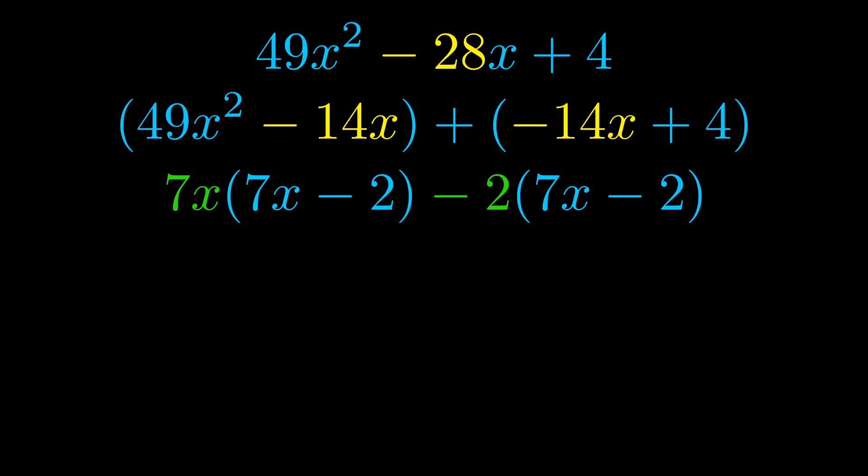Notice also how what remains inside of the parentheses is the same in both cases. The blue values are the same. Those blue values will become one of our factors, and we will combine the two green values—the GCFs that we pulled out—to get the other one. And that is our fully factored equation.